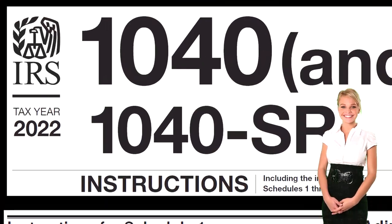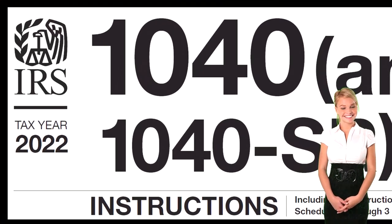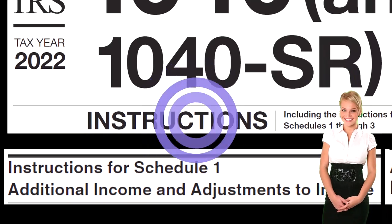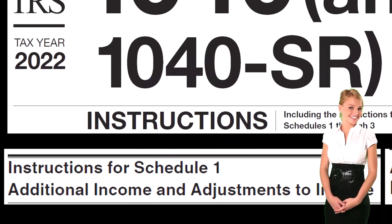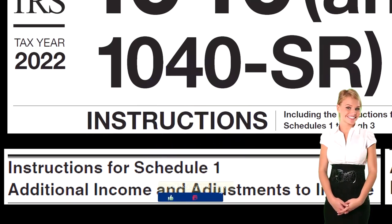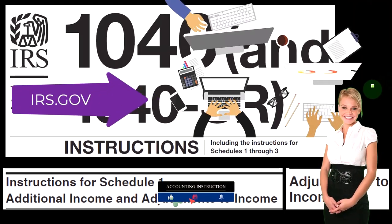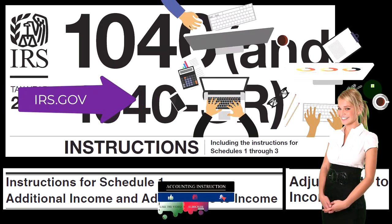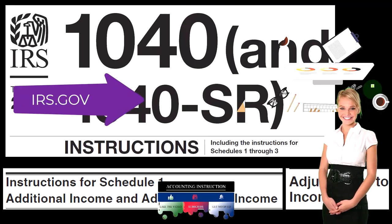Most of this information comes from the Form 1040 Instructions, Tax Year 2022, specifically the Instructions for Schedule 1, Additional Income and Adjustments to Income. The Adjustments to Income section can be found online at the IRS website, irs.gov.